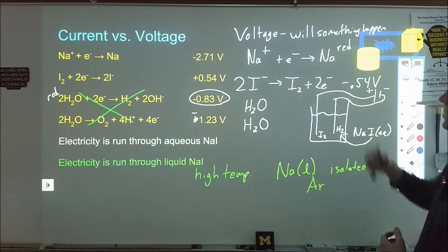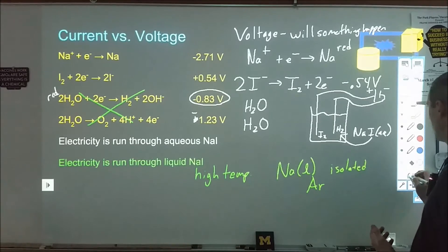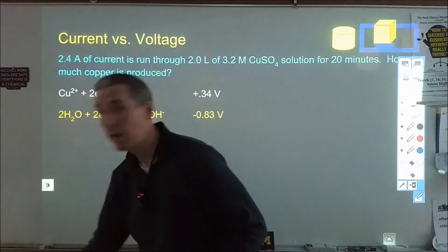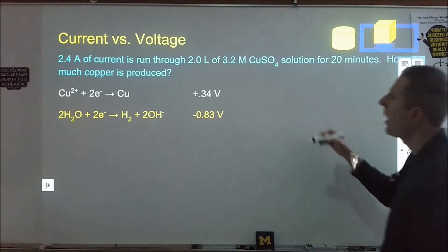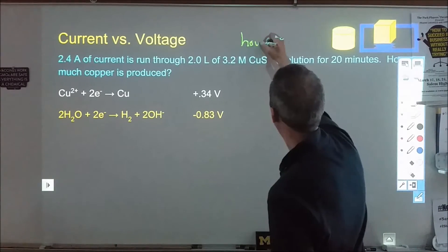So voltage tells us whether or not something will happen. We can use that to figure out when we have competing processes, which one would occur. Now current tells us how much. How much will we make?